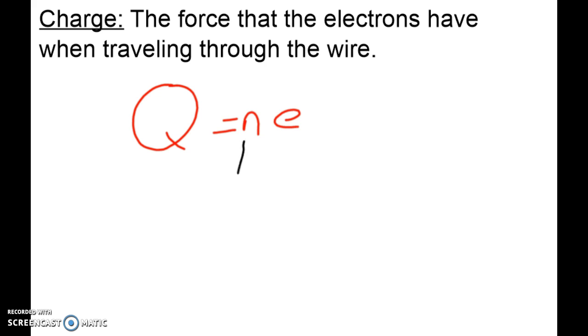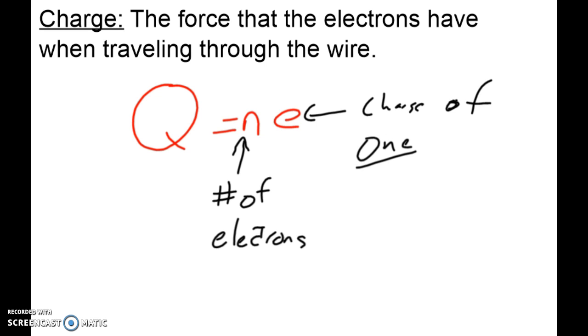So the formula q equals nE. n represents the number of electrons. Now if we're looking at e, this is the charge, or you can think of it as force, of one individual electron.